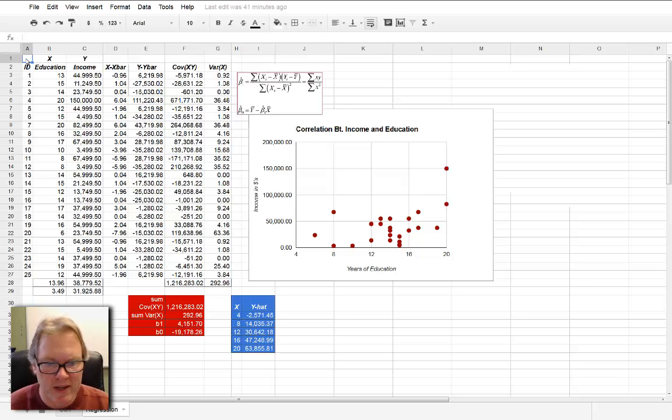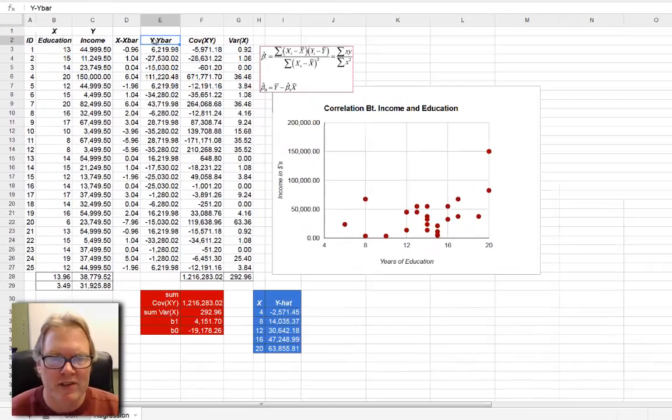So here we are in our Google spreadsheet. You can see I've got this up and running, I've entered all the data, and I've even gone ahead and made the calculations. So what we're really going to do is just look at how the formulas work. You can see I've repeated the formula here in case you need to see it, but it's real simple: it's the covariance of x and y divided by the variance of x. So let's go through our data.